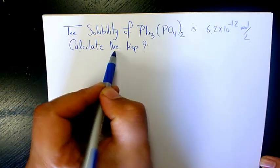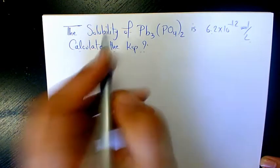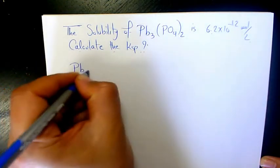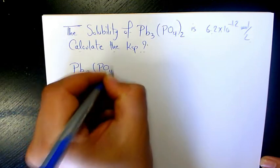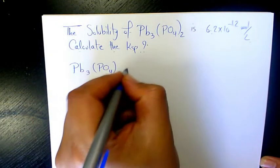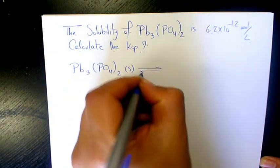Calculate the Ksp. So first of all, Pb3(PO4)2, which is lead phosphate in solid form, when it dissolves